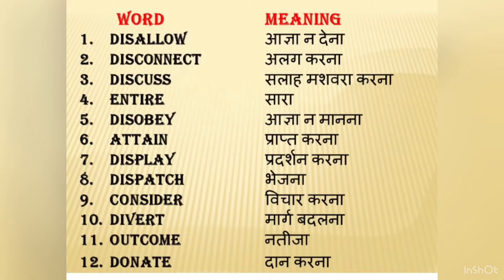Let's review once more. Disallow means aagya na deyna. Disconnect means alag karna. Discuss means salah mashwara karna. Entire means sara ya sampurn. Disobey means aagya na maana. Attain means prapt karna. Display means pradarshan karna. Dispatch means bhejna. Consider means vichar karna. Divert means marg badalna. Outcome means nateeja. Donate means daan karna.